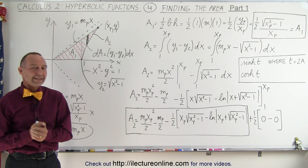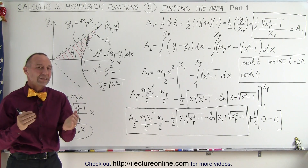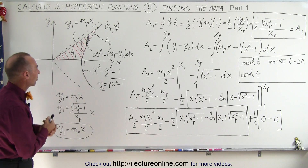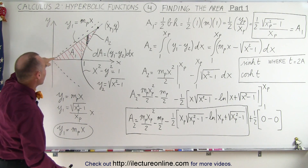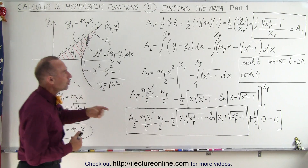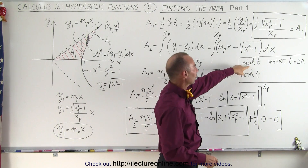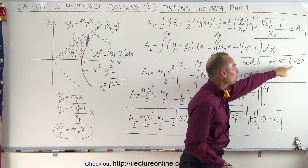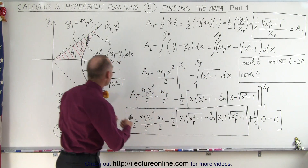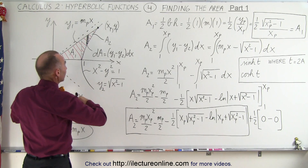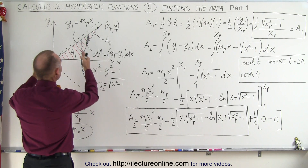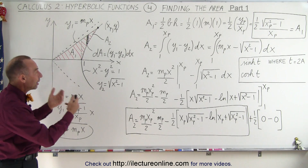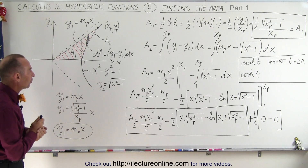Welcome to our lecture online. We're going to calculate the area which defines the hyperbolic functions. Remember this area from the previous videos? When we define the hyperbolic functions like the hyperbolic sine or the cosine, t is actually twice that area. So we wanted to know the area so we can actually calculate the hyperbolic sine and cosine based upon it. That's typically not what we do, but at least it helps us understand hyperbolic functions a little bit better.